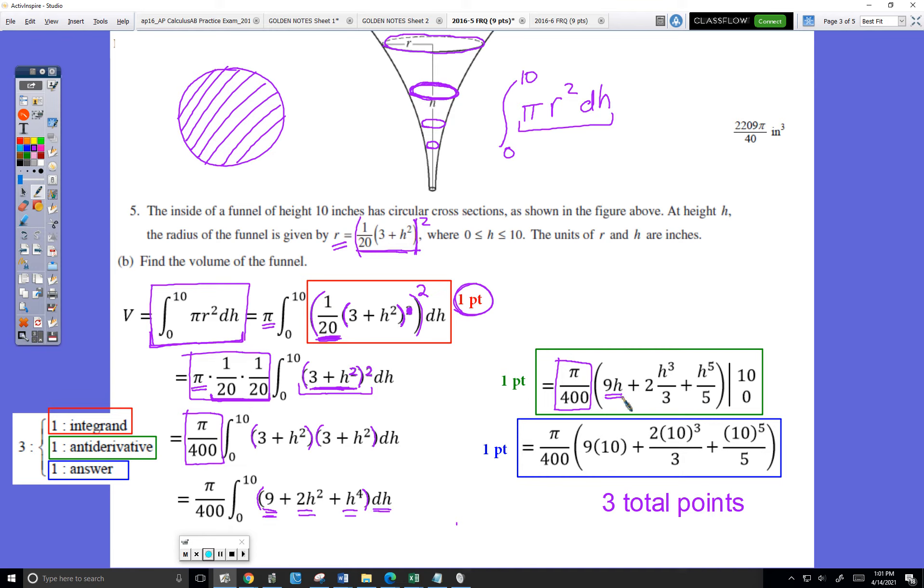2h squared becomes 2h cubed over 3. H to the 4th becomes h to the 5th over 5. And then we must evaluate that between 0 and 10. So this is that idea again that if I can't pick up a calculator and integrate, what I do instead is I find the antiderivative and I evaluate. That's the fundamental theorem.